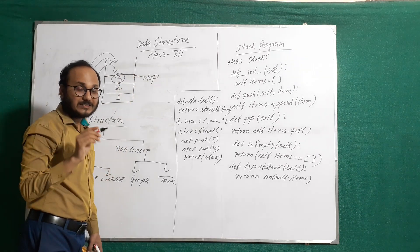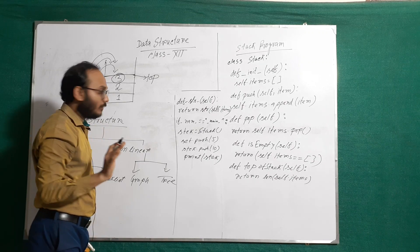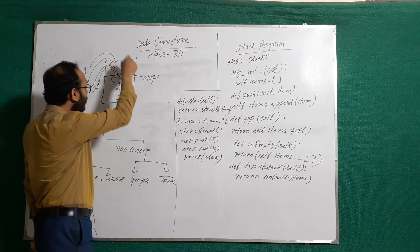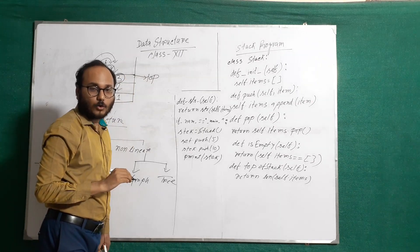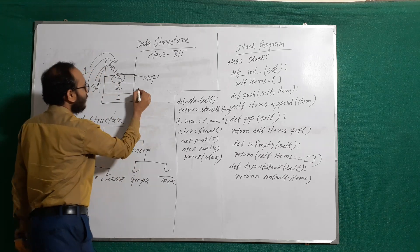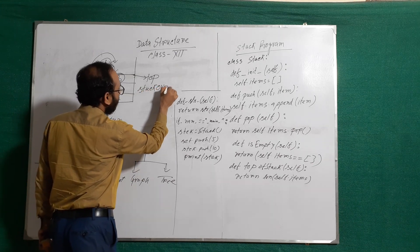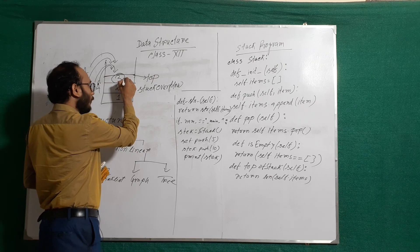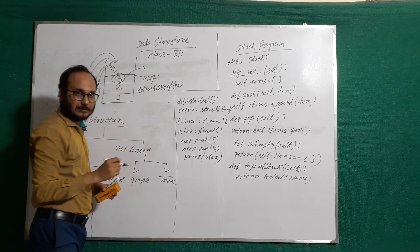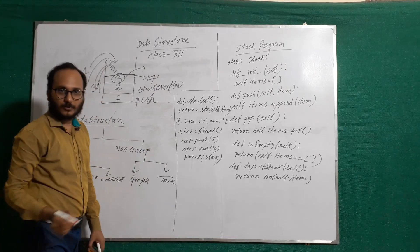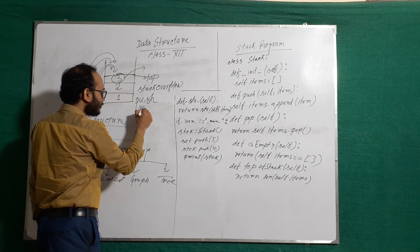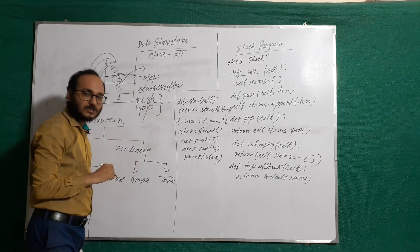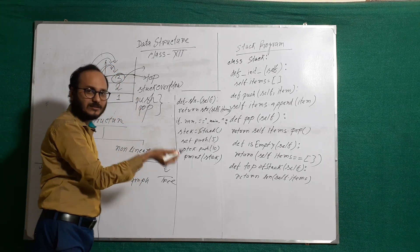Suppose the stack can store only 3 elements — when it reaches 3, it is called stack full. If we try to insert element 4 into a full stack, this situation is called stack overflow. Inserting an element is called push, and deleting an element is called pop. Stack has only two operations: push and pop.